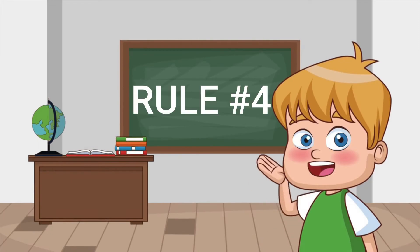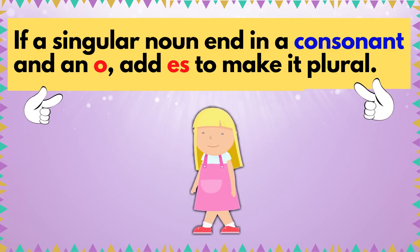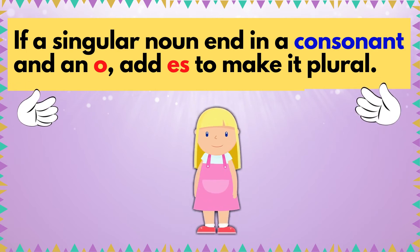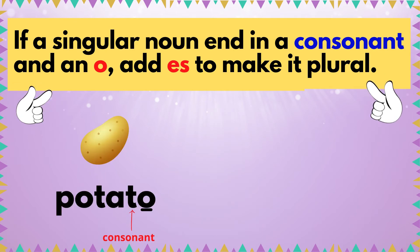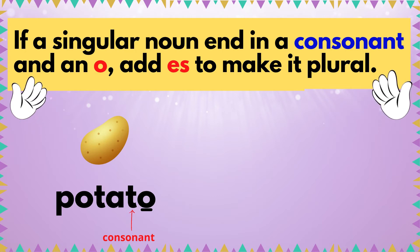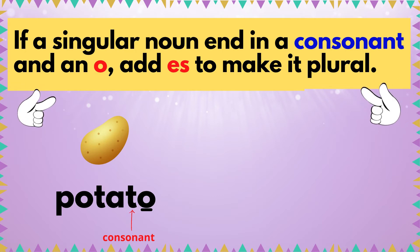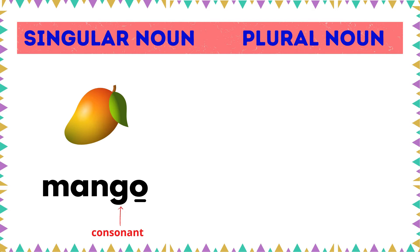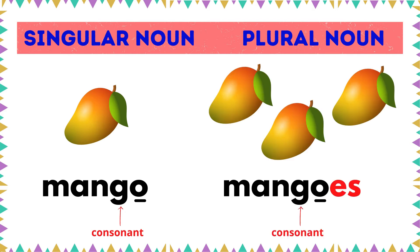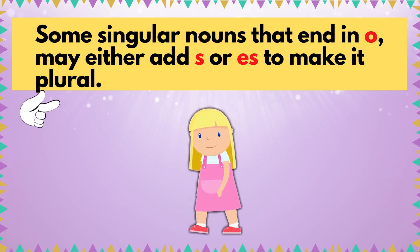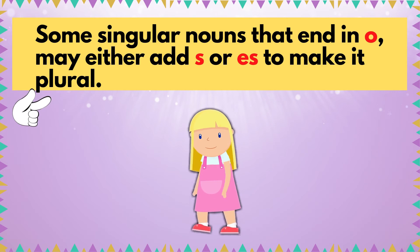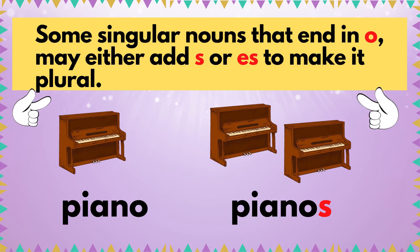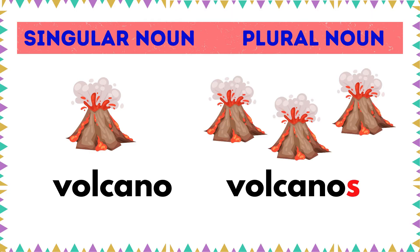Rule number four: if a singular noun ends in a consonant and an O, add ES to make it plural. Take these examples. Potato — the last two letters are T as a consonant and letter O — potato becomes potatoes. Same goes with mango — mangoes. However, some singular nouns that end in O may either add S or ES to make it plural. Piano becomes pianos. Volcano becomes volcanoes.